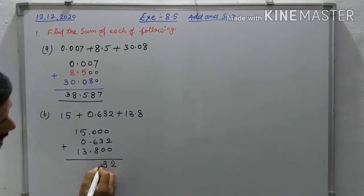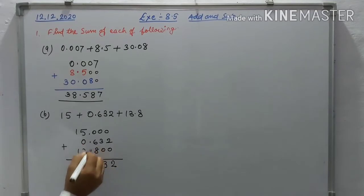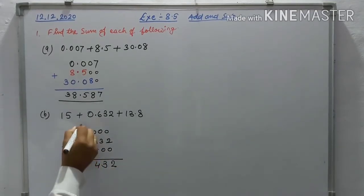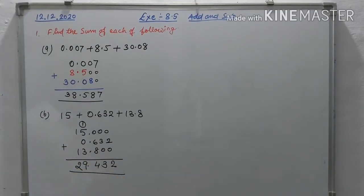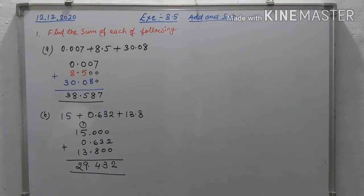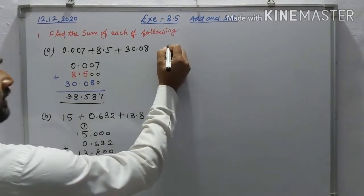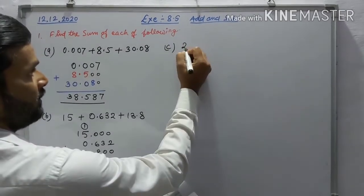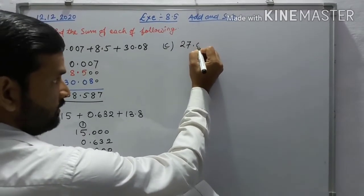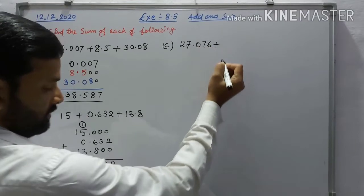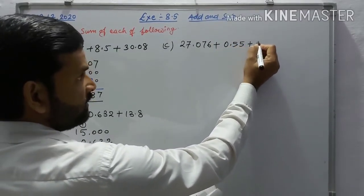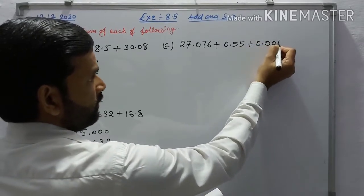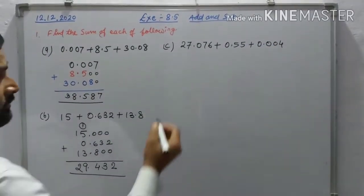Adding: 2, 3, 3, 8, and 6 is 14 — carry 1 — giving 29.432. The answer is 29.432. Now question (c) is 27.076 plus 0.55 plus 0.004.